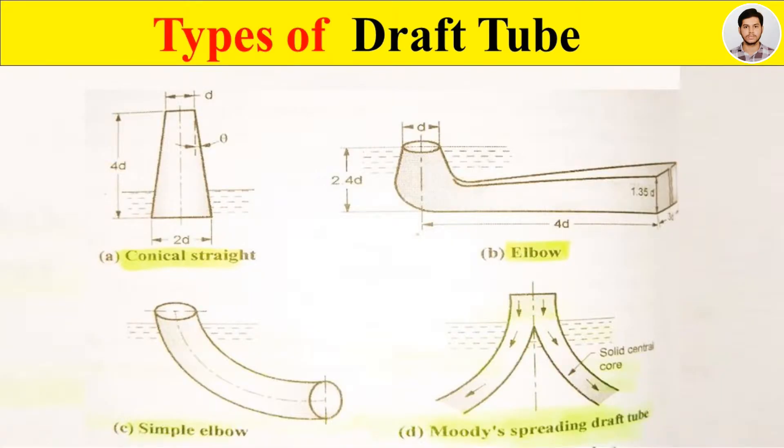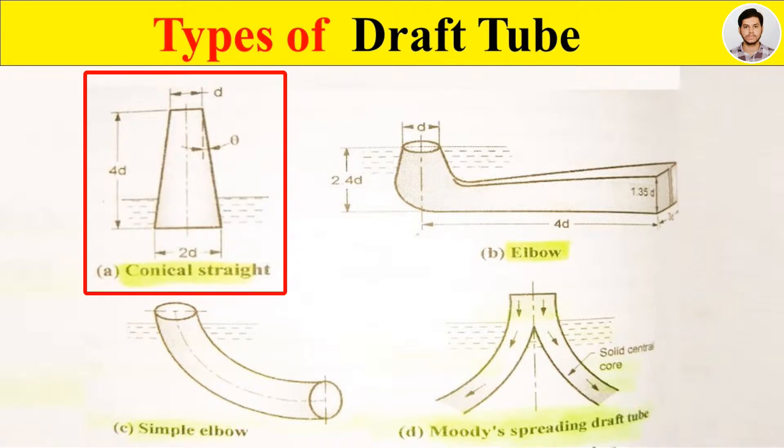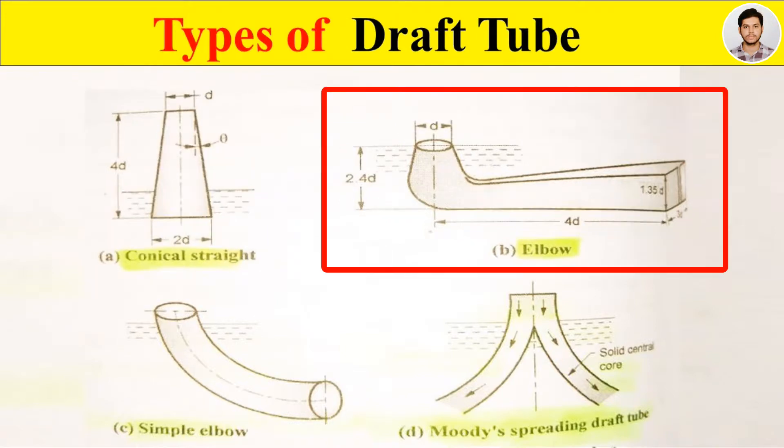Now we see types of draft tube. First is a conical draft tube, second is a simple elbow draft tube, and fourth is a Moody's spreading draft tube.